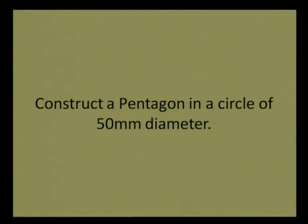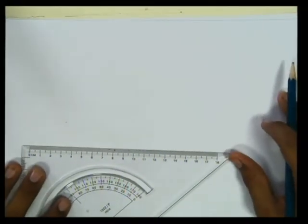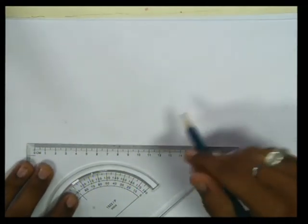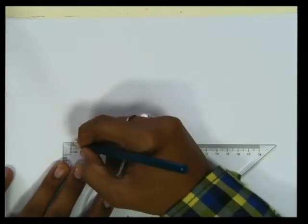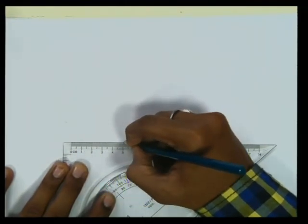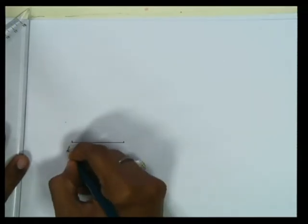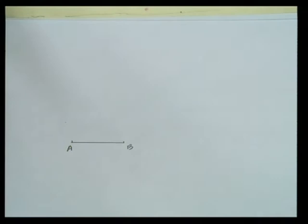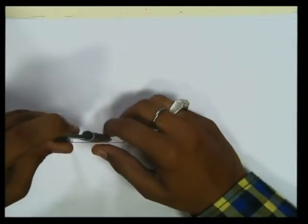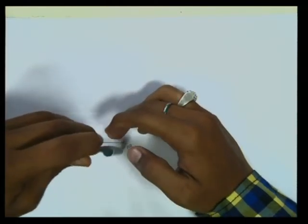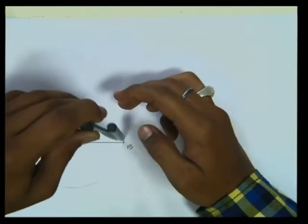The next problem: construct a pentagon in a circle of 50mm diameter. We need to construct a circle of 50mm diameter using the three-circle method. First, we will draw a 50mm line, naming it AB. Taking A as center and AB as radius, we draw the first circle.